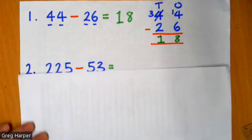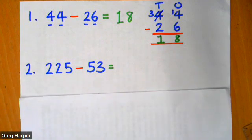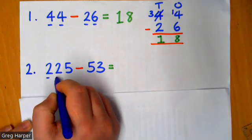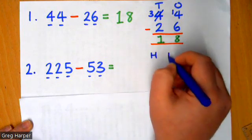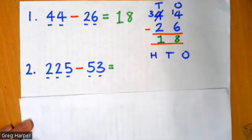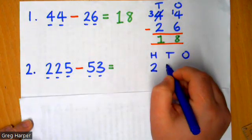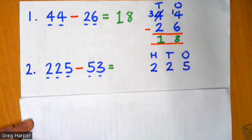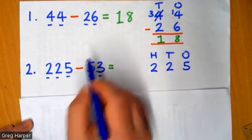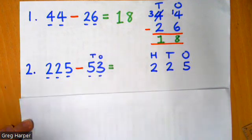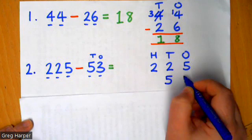So our second question is 225, take away 53. So again, I'm going to draw my column method. This time, I've got a three digit number, minus a two digit number. So I'm going to need my hundreds column, my tens column, and my ones column. And when I put my numbers in, I need to be extra careful to make sure they're lined up correctly. So my 225, I've got two hundreds, two tens, and five ones. And then for my 53, I know that this five is worth five tens. So I need to be extra careful to put my five into my tens column, and my three into my ones column.